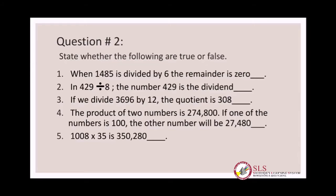This is question number two of Exercise 1C: state whether the following are true or false. The first one: when one thousand four hundred and eighty-five is divided by six, the remainder is zero. We will divide 1485 by six — if we get zero as the remainder it is true, otherwise false.